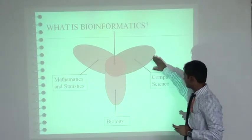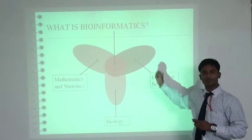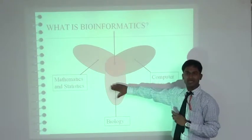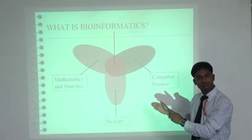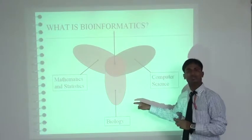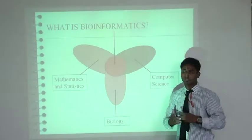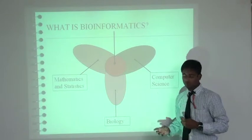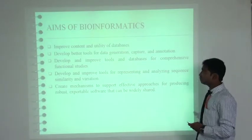The three main interdisciplinary fields are computer science, biology, and mathematics and statistics. From biology and molecular biology, bioinformatics gains knowledge, which is used to make specific algorithms through mathematics and statistics. These algorithms are then applied using computer science for new discoveries — it is like a clockwise circle, continuously generating enormous amounts of data.